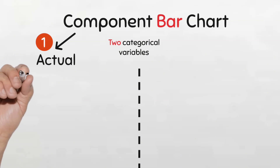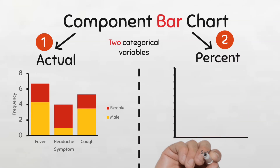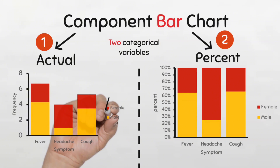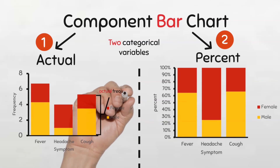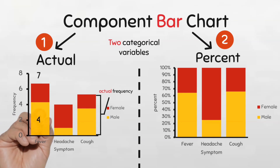The first is called the actual component bar chart, and the second is the percentage component bar chart. In the actual component bar chart, the actual frequency or the value of the main category represents the overall height of each bar, and the actual value or frequency of the subcategories represent the height of each component. So in this example, if there were seven individuals with fever — four males and three females — the height of the whole bar will be a frequency of seven, that's seven units. And the height of the male part, the yellow part, will be four units, and that of the female, the red part, will be three units. So you see the actual frequencies are being used here.